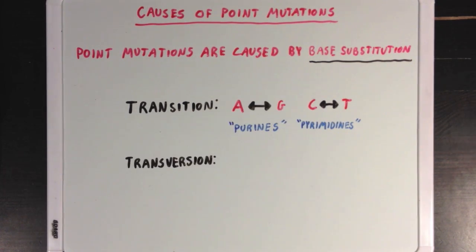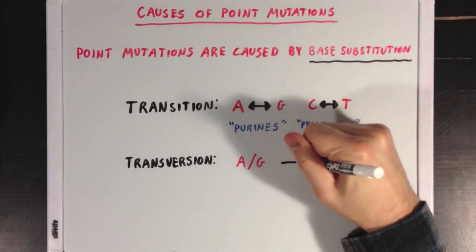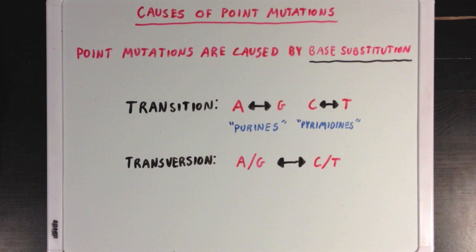A transversion is when either adenine or guanine is swapped for either cytosine or thymine. And in this type of base substitution, you have either a purine being replaced with a pyrimidine, or a pyrimidine being replaced with a purine.